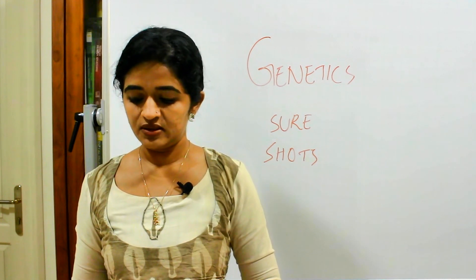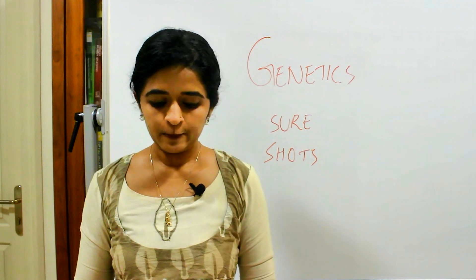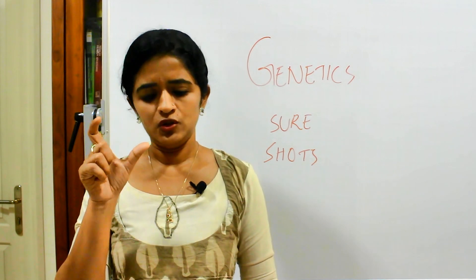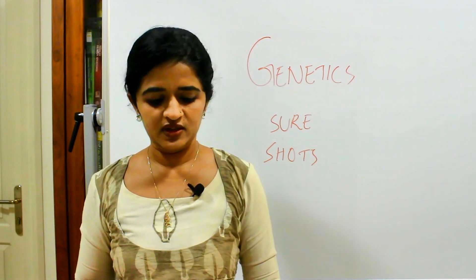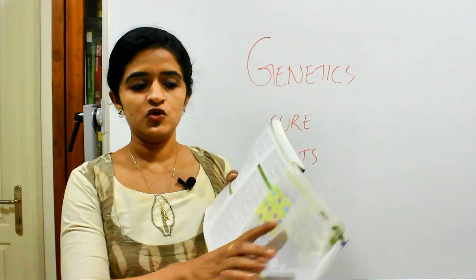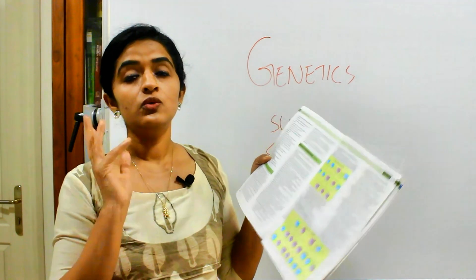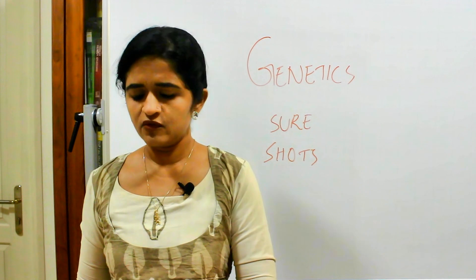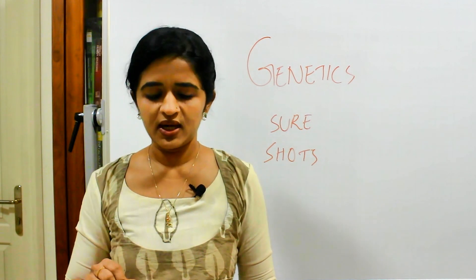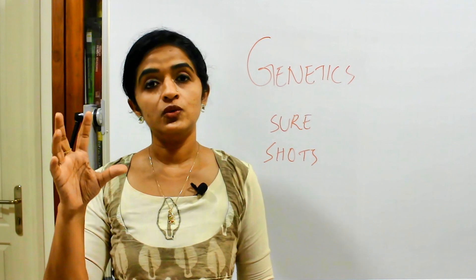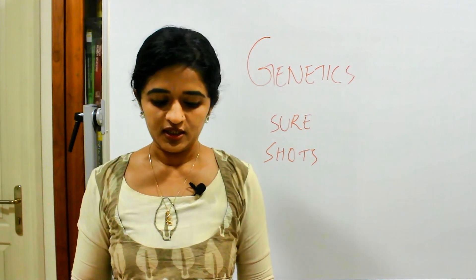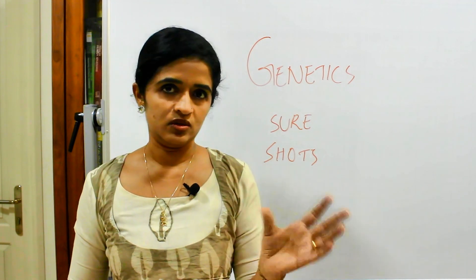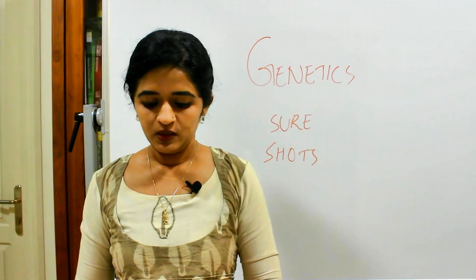Coming to the modes of inheritance, there is autosomal dominant inheritance, autosomal recessive inheritance, and sex-linked inheritance — both X-linked and Y-linked. With the help of a flowchart like this, it will be easy to understand what autosomal dominant means and how it is transferred from parent to offspring. If you can draw this diagram, it will be easy to fetch more marks.